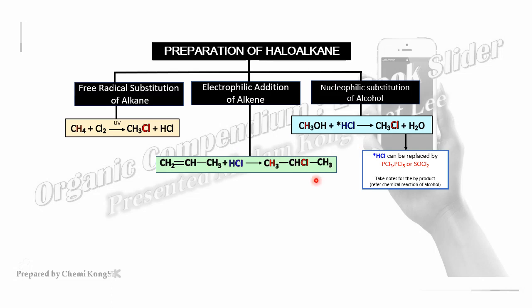This video will discuss the preparation of haloalkane and the chemical reactions of haloalkane. There are also two mechanisms we need to learn in this topic. First, we look at the preparation of haloalkane — there are three preparations. The first one, which you have learned in Chapter 5 Hydrocarbon, is free radical substitution.